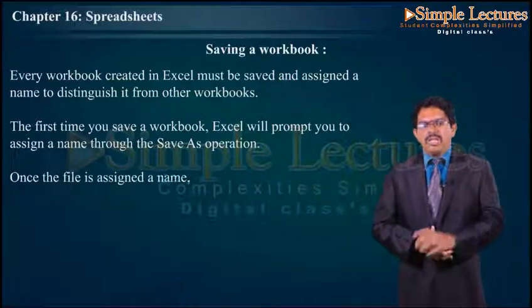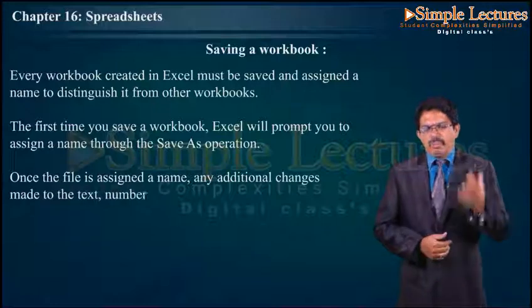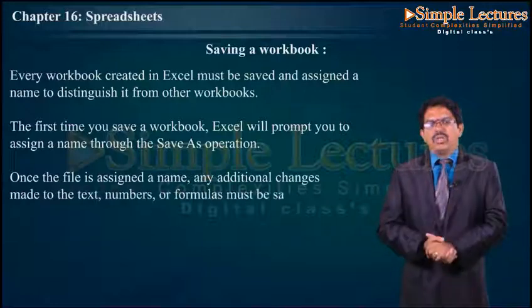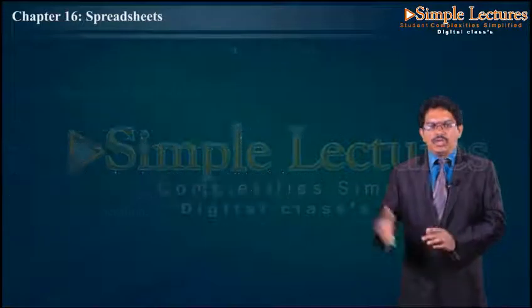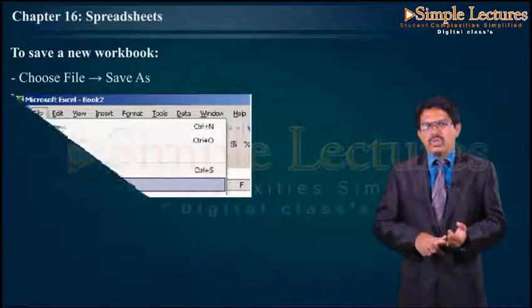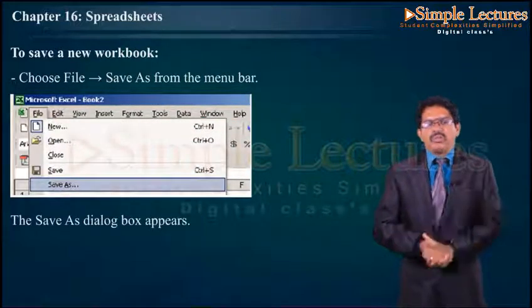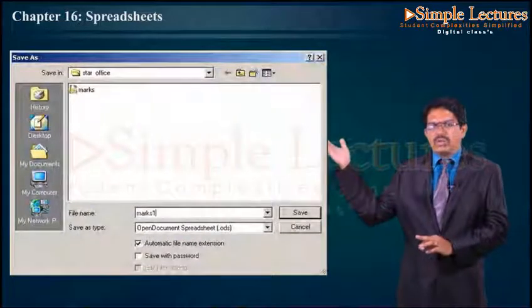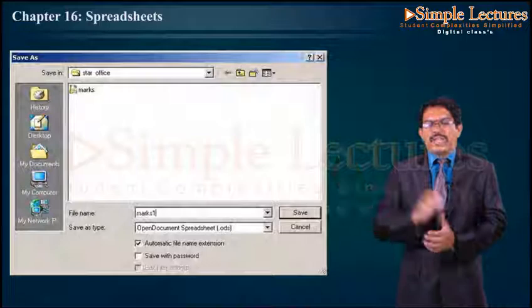Once a file is assigned a name, any additional changes made to the text, numbers, or formulas must be saved through a Save operation. To save a new workbook, choose File, Save As from the menu bar. The dialog box appears. This is the format of Save As where you type the name and give the extension as .xls.